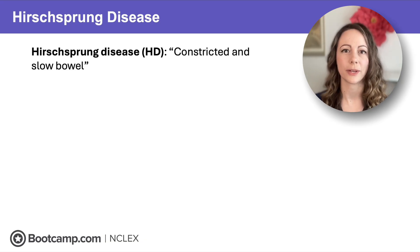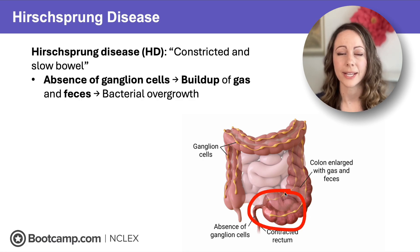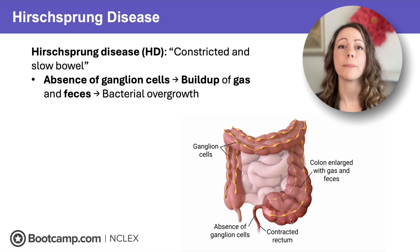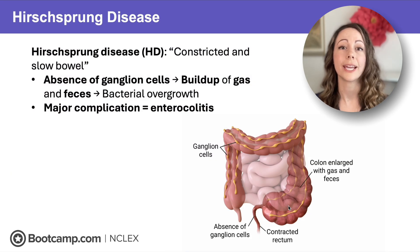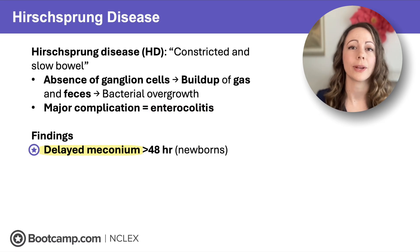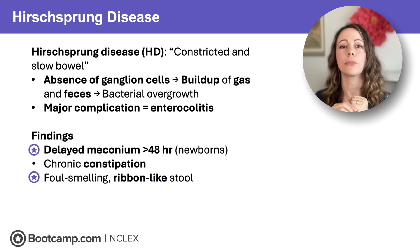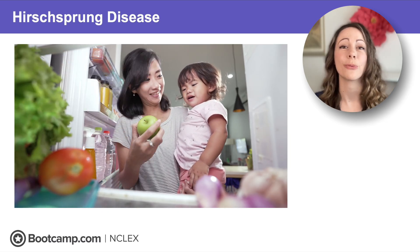Now down to the colon: Hirschsprung disease — think contracted and slow bowel. There's an absence of ganglion cells in the distal colon and rectum, so the rectum remains contracted with no peristalsis, causing a buildup of feces and gas. That leads to bacterial overgrowth and our major complication: enterocolitis, or inflammation of the colon. We'll see delayed meconium in newborns — greater than 48 hours after birth — chronic constipation in older kids, and foul-smelling ribbon-like stool because it passes through that contracted rectum. Poor feeding leads to weight loss and growth failure.